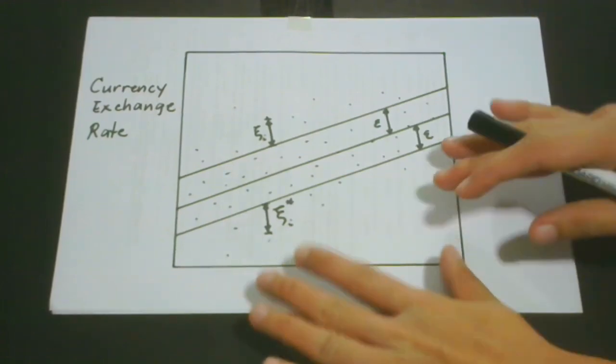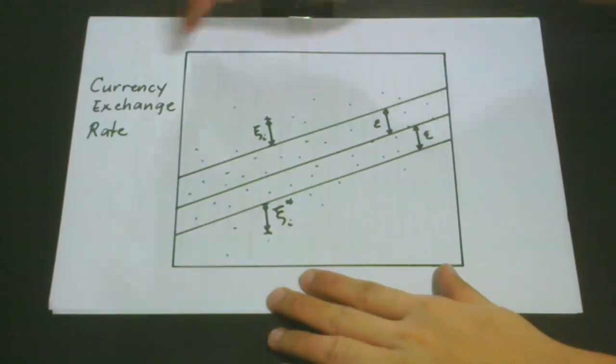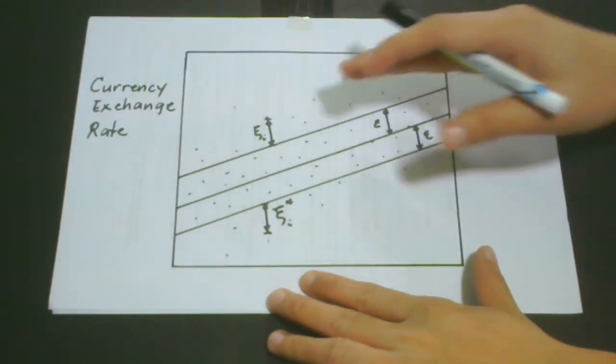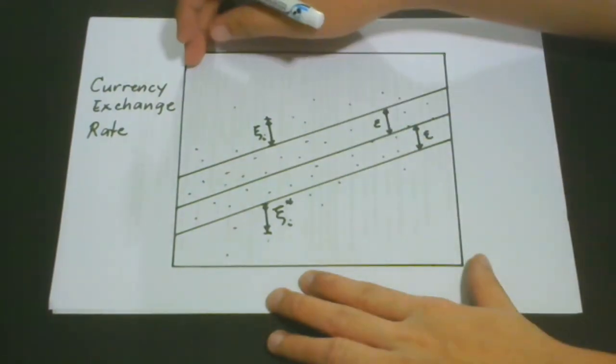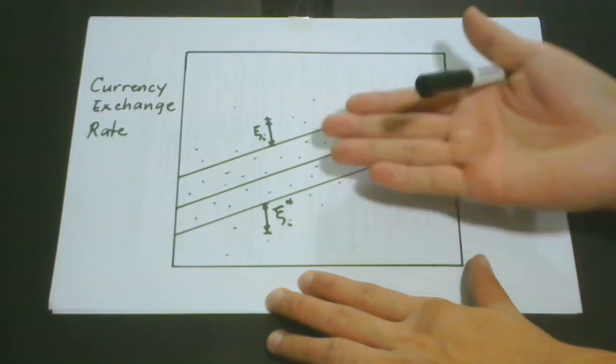Our today's lesson can be best understood in the light of this example. So we have a currency exchange rate, and let's consider that you have a business in this field, and we know exactly that exchange rates are really fluctuating.